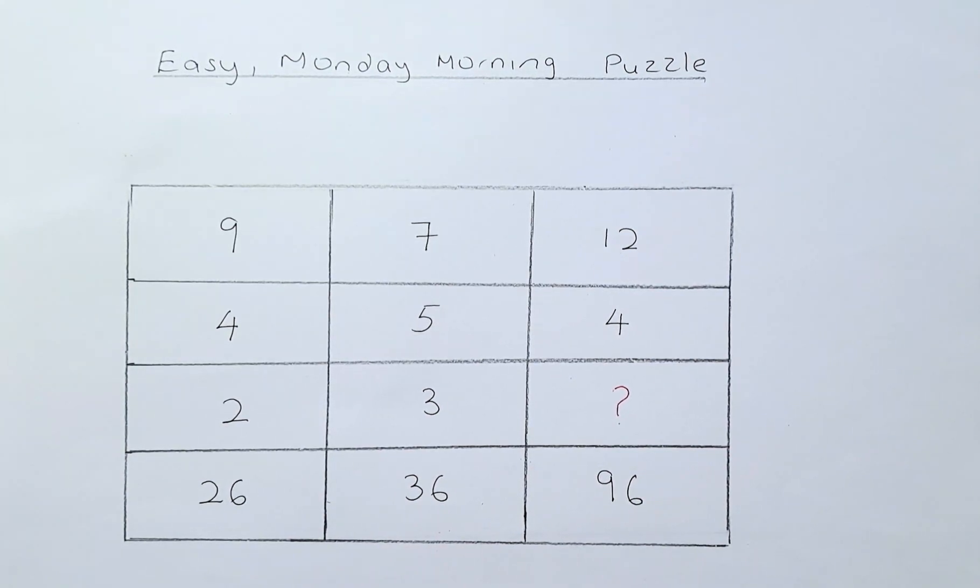If you look carefully, the biggest numbers are at the bottom row: 26, 36 and 96. Technically you have to find the relationship between the numbers in the column to get the final numbers in the bottom row.